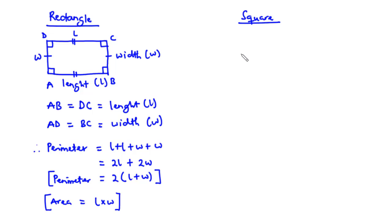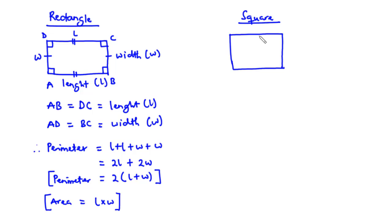A square is a special type of rectangle with all its sides being equal, and the sides are also at right angles to each other. So all four sides are equal, and we label each side L.